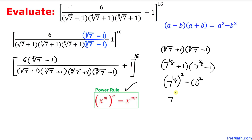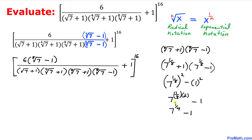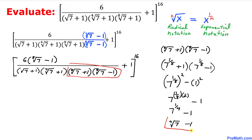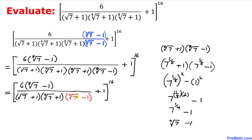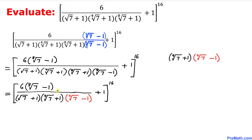Now we are going to use the power rule, so this problem is going to become 7 to the power 1/8 times 2, minus 1 squared. When we multiply these exponents, 2 times 1/8 equals 1/4, so we get 7 to the power 1/4 minus 1. This can be written in radical notation as the fourth root of 7 minus 1. Thus this part has been simplified to the fourth root of 7 minus 1.